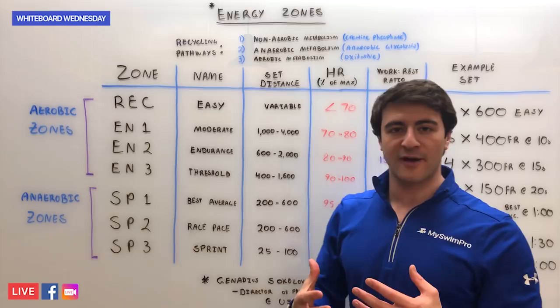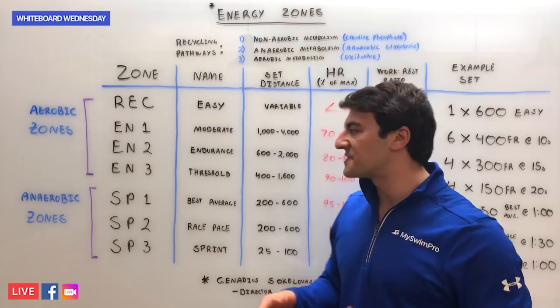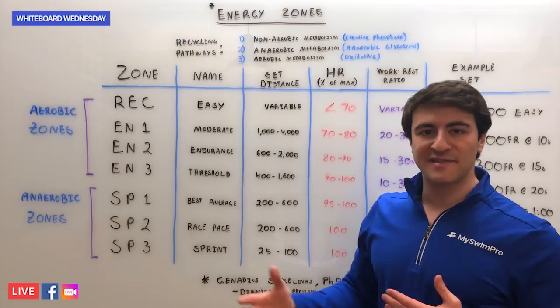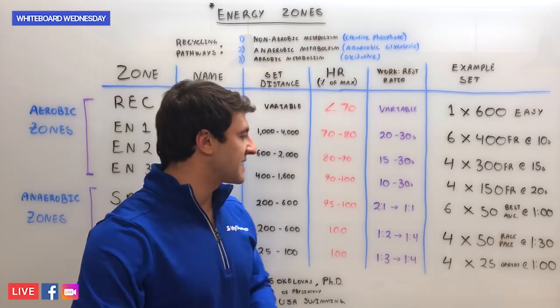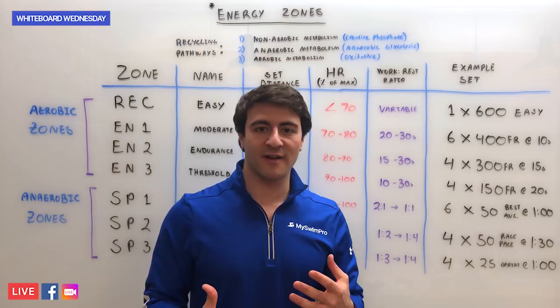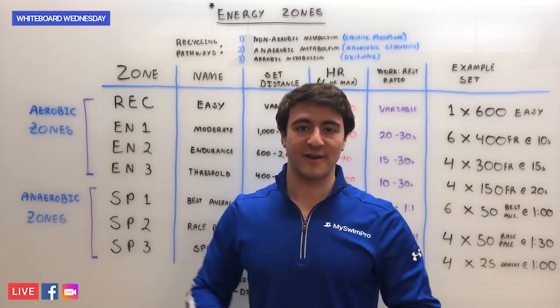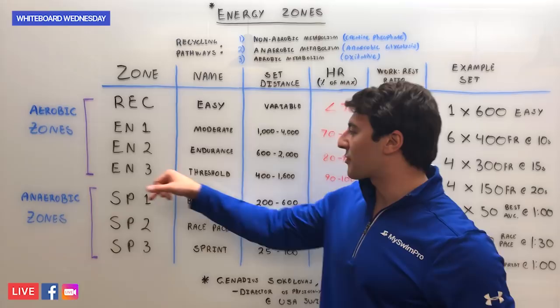EN3 is your threshold zone — often referred to as a short rest set where you're really maxing out your aerobic energy system at the top end of the aerobic zone. These sets are only 400 to 1600 meters and you're pushing about 90 to 100% of your heart rate max. An example set might be four 150s freestyle on about 20 seconds rest, or six 100s freestyle with only five seconds rest. For an elite swimmer that might be six 100s freestyle on the 1:10, getting only three or four seconds rest — that's your threshold EN3 zone.